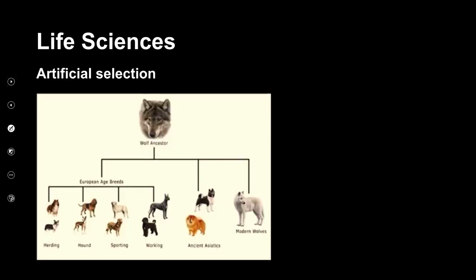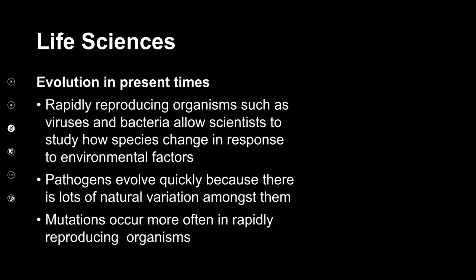Here we can see a diagram showing dogs bred from a wolf as common ancestor, with all the various breeds including the modern wolf. This would be an example of a cladogram where we can see the speciation events and the species that exist today.